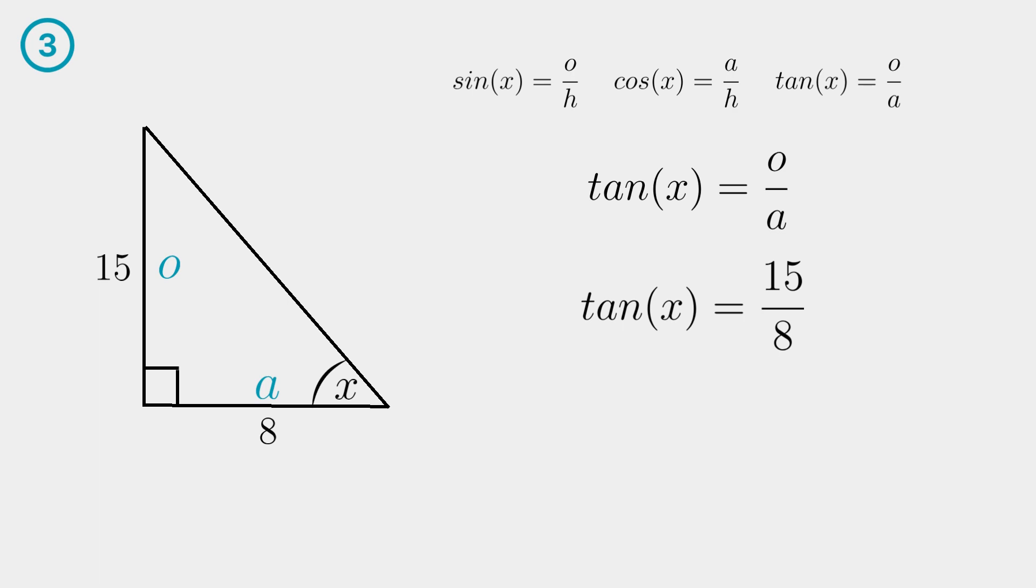Type the inverse of tan fifteen over eight into your calculator and then you have your answer. X is sixty one point nine three degrees rounded off to two decimals. Don't forget the degree symbol since X is an angle.